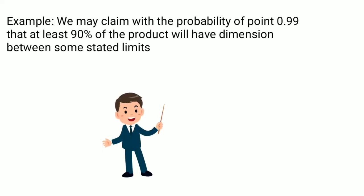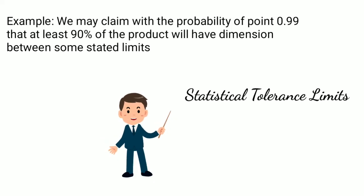So, the limits and the probability the manufacturer will decide. For example, we may claim with the probability of 0.99 that at least 90% of the product will have dimensions between some stated limits. And these limits are defined by the producer.